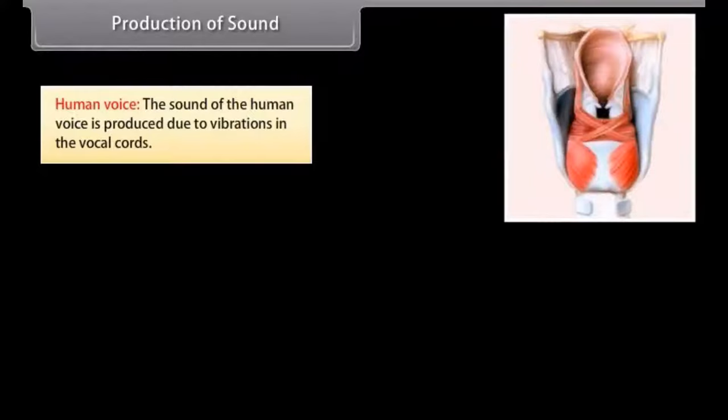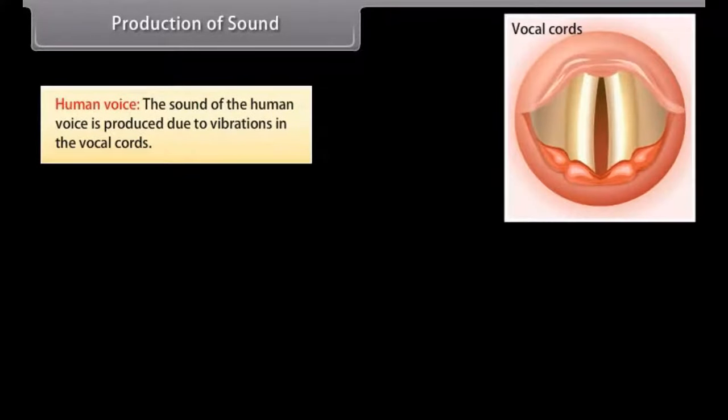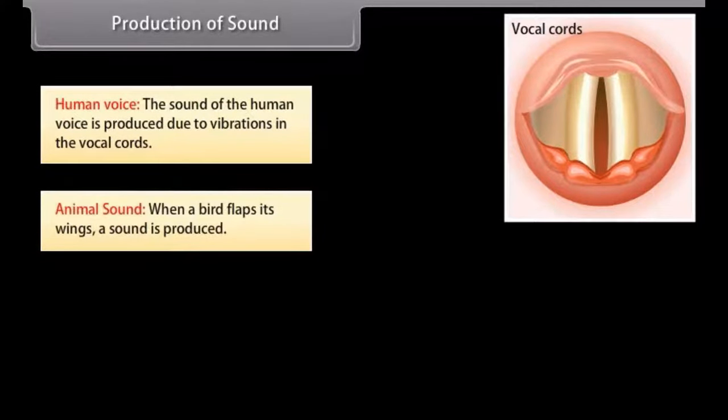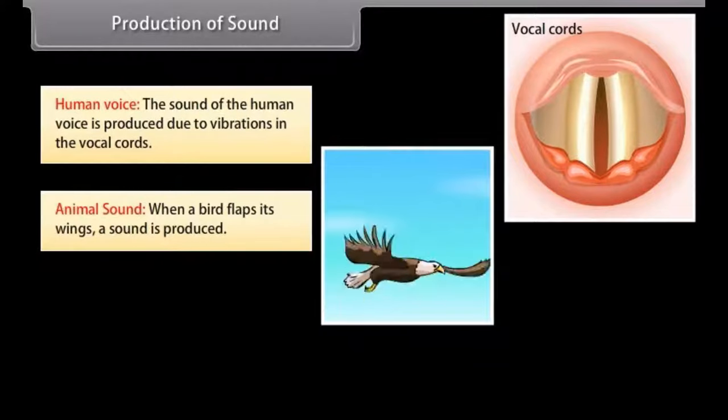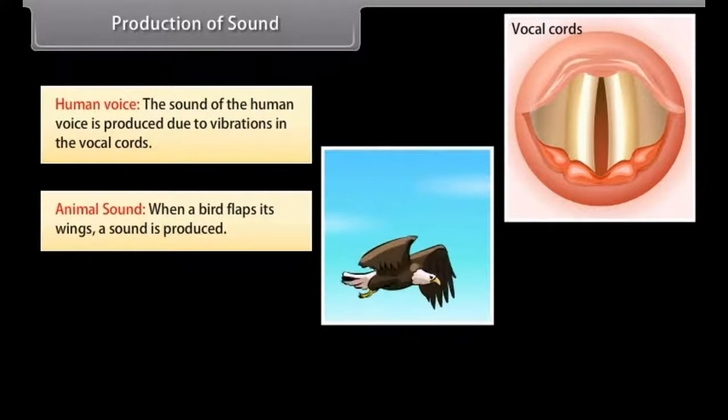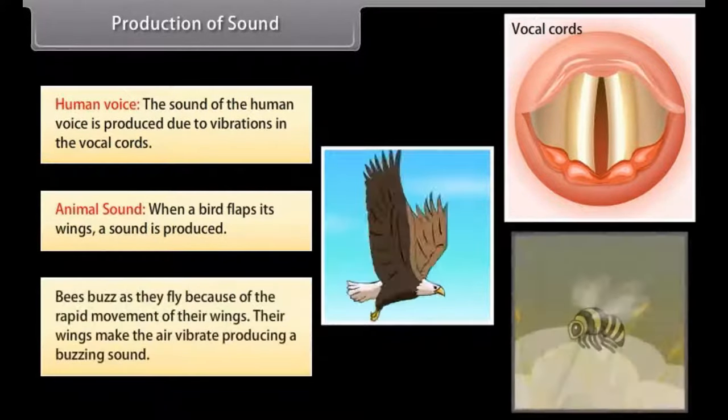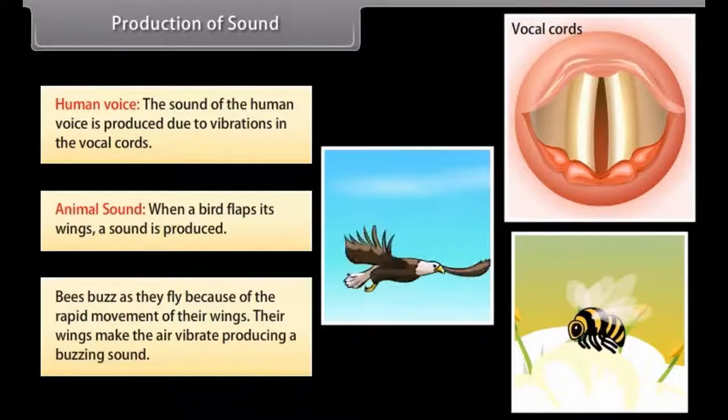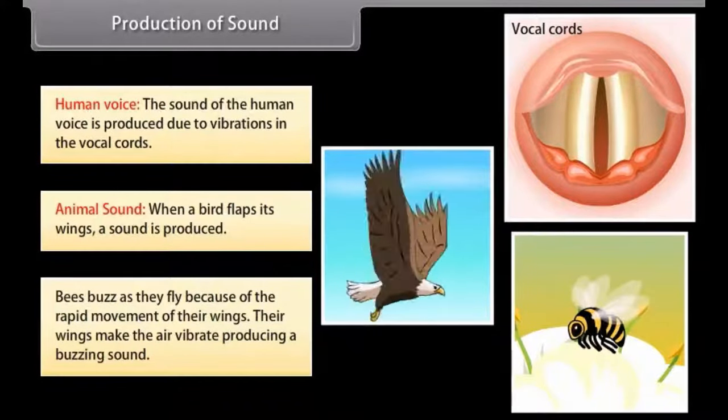Let us look at some examples of how certain sounds are produced. Human voice. The sound of the human voice is produced due to vibrations in the vocal cords. Animal sound. When a bird flaps its wings, a sound is produced. Bees buzz as they fly because of the rapid movement of their wings.